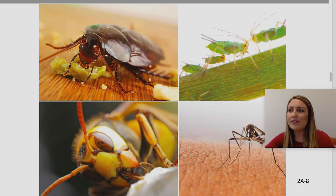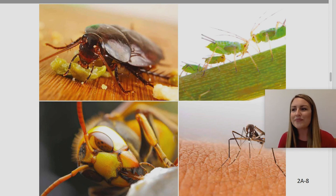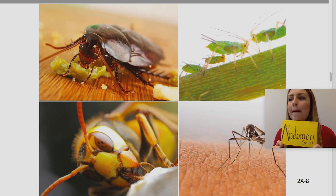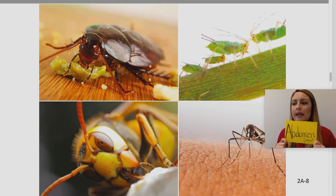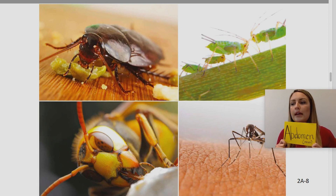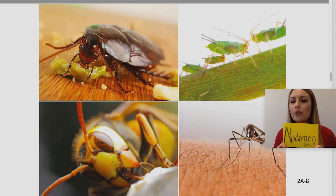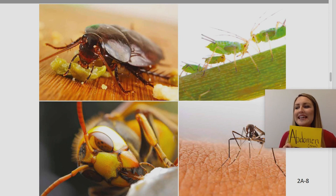In our previous lesson, we learned some very important vocabulary words that helped us better understand what we read about. Let's review these vocabulary words. The first word is abdomen. You say it — abdomen. This word is a noun. The definition is the end part of an insect's body, the body segment that contains the digestive and reproductive structures. An example: the abdomen is the largest body part of most insects. The plural form would be abdomens.